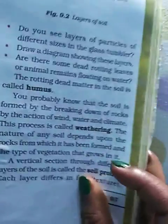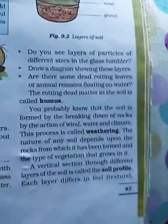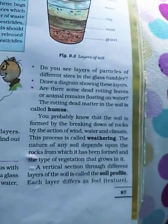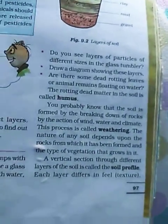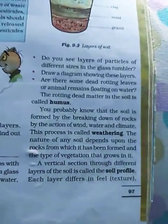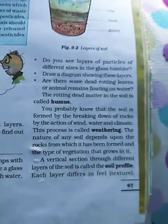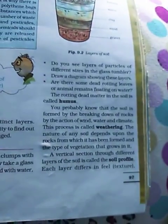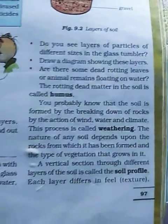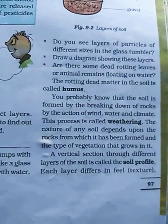Since weathering is a natural process, it is done in nature only. That's why soil is an important natural resource. The nature of any soil depends upon the rocks from which it has been formed and the types of vegetation that it grows.